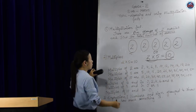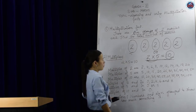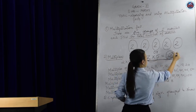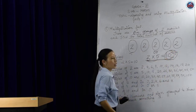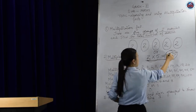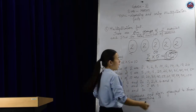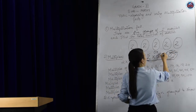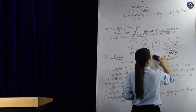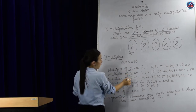Now let's go to multiples — the second concept. What do we mean by multiples? Using the example 2 into 5 equals 10, your answer 10 is your multiple. I can say that 10 is a multiple of the 2 table, and 10 is also a multiple of the 5 table. So let's find out some of the multiples — multiples of 2, 5, and 10.